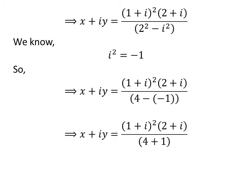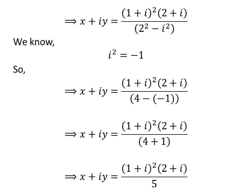As minus of minus 1 is 1, the denominator is 4 plus 1. Further simplification gives us x plus i times y is equal to the square of (1 plus i) times (2 plus i) upon 5.